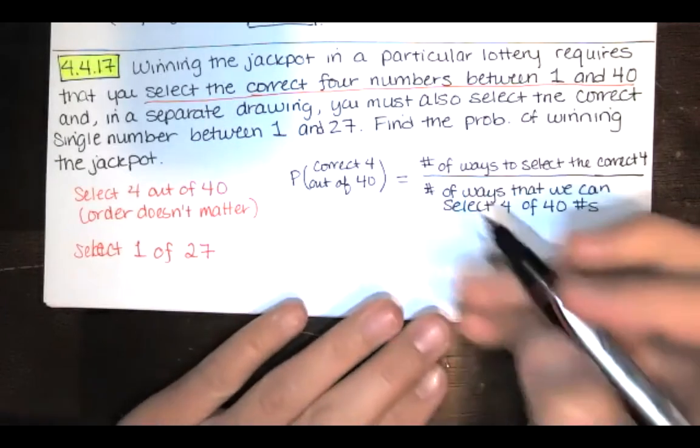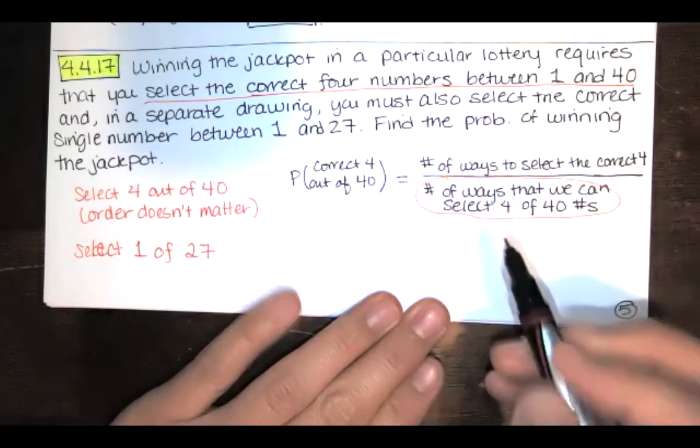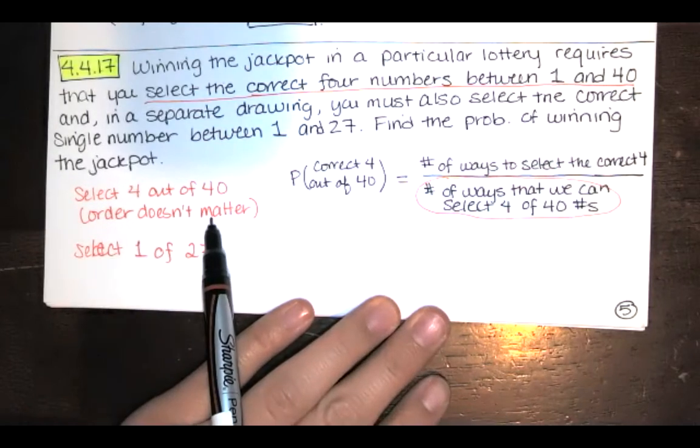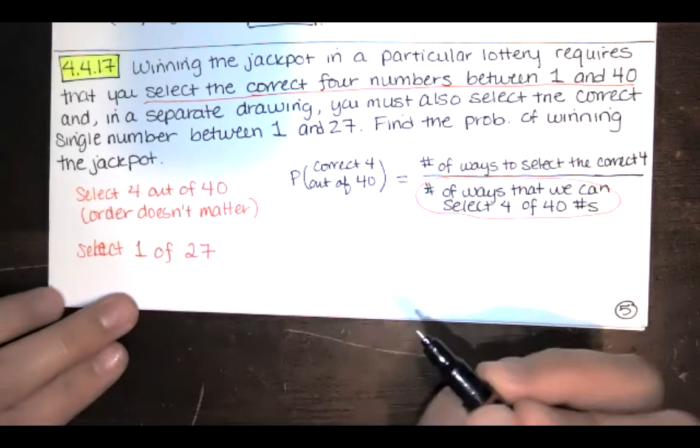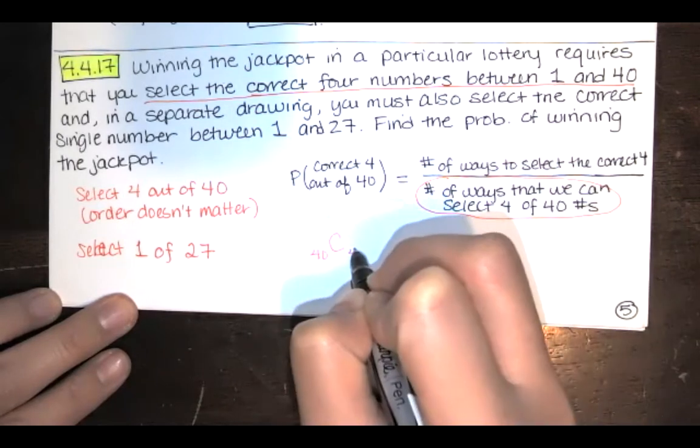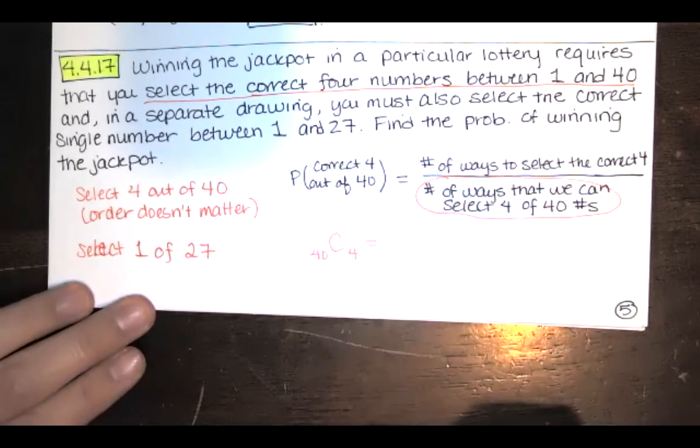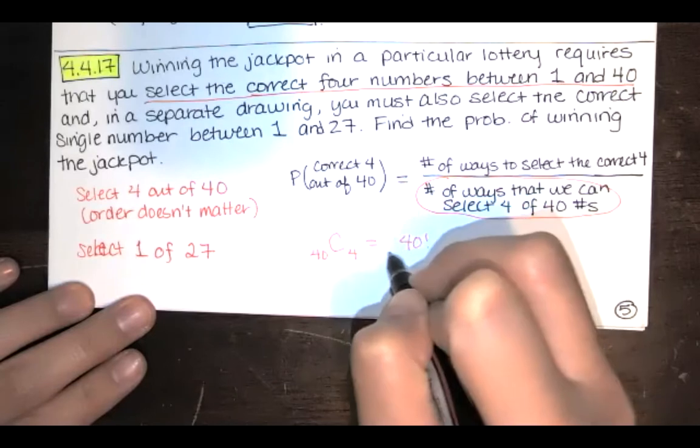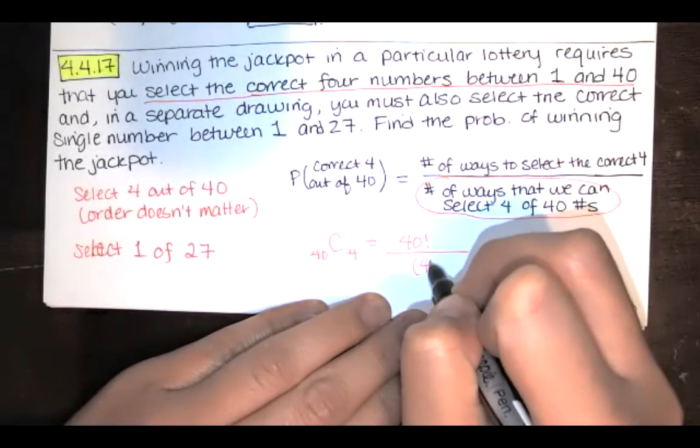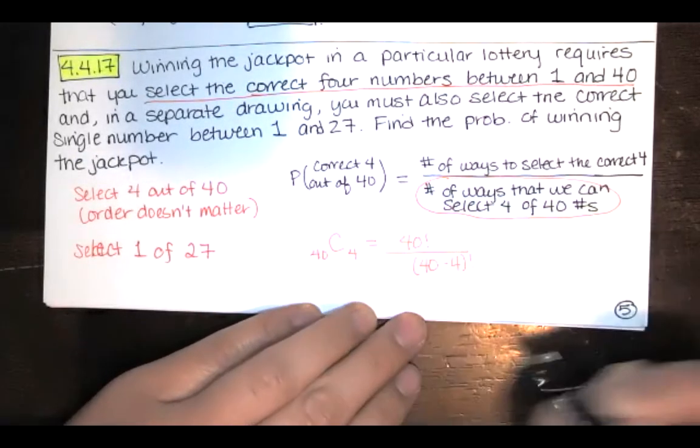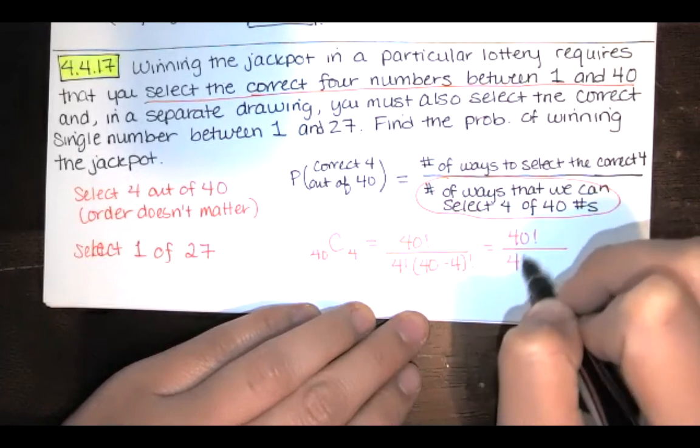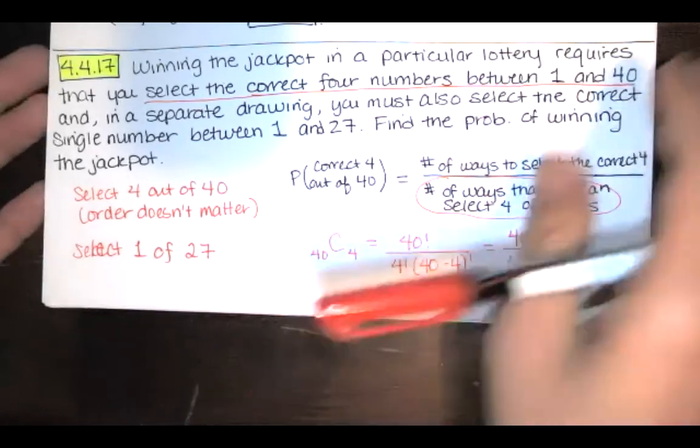In order to evaluate this, we need to use our understanding of permutations and combinations. Since order doesn't matter, we're going to use a combination here. We have 40 numbers and we want to select four of them. The formula for that is to take 40 factorial and then divide by that number minus four factorial, and then divide by four factorial. So what we get is 40 factorial over 4 factorial times 36 factorial.